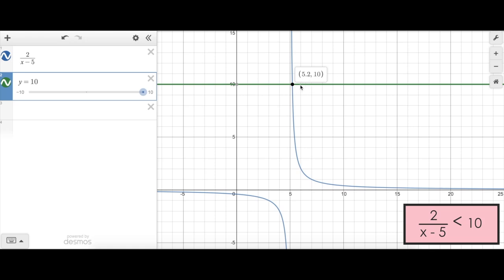If I move to the right of 5.2, you can see this function decreases below 10, and will continue in that way forever. If I look to the left of 5.2, the blue function is above the green line, suggesting 2 over x minus 5 is greater than 10, when x is less than 5.2.